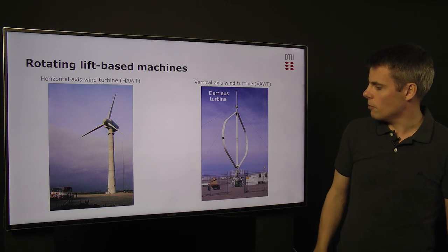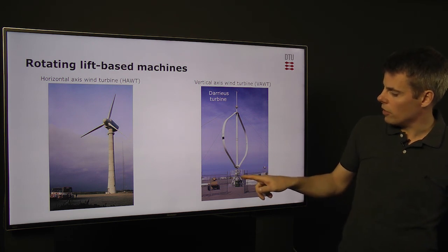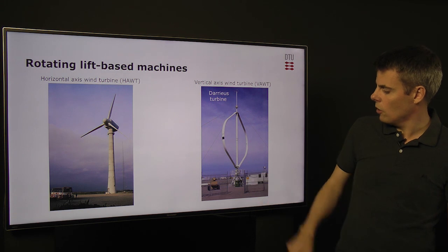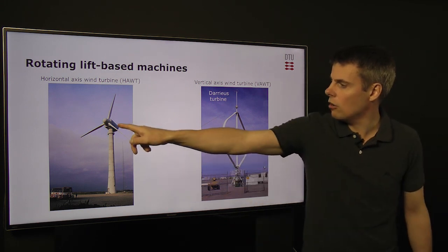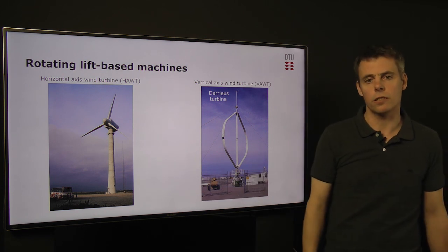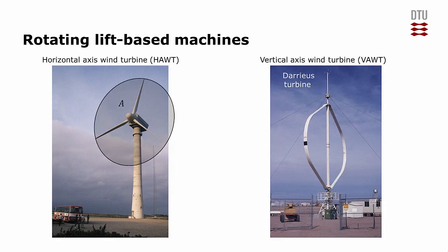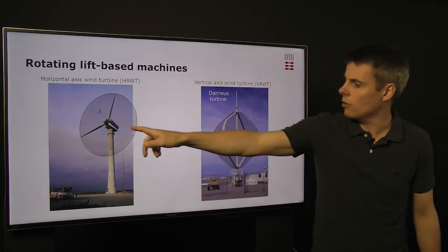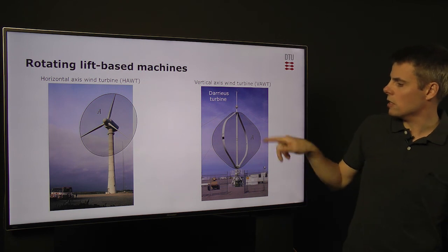a Darrieus turbine, where the energy is now extracted in the bottom of the turbine instead of up at the top of the tower in the nacelle from the generator. The swept area is quite easily calculated for these because they are simply given by the rotor diameter or the size of the rotor.